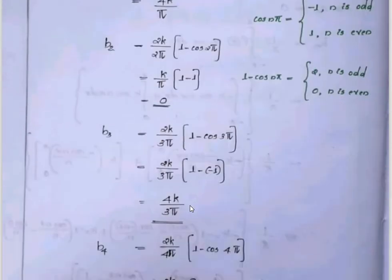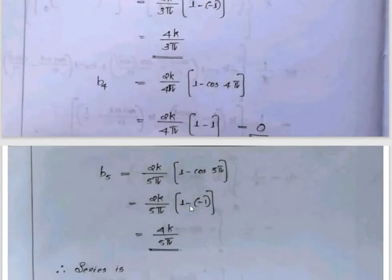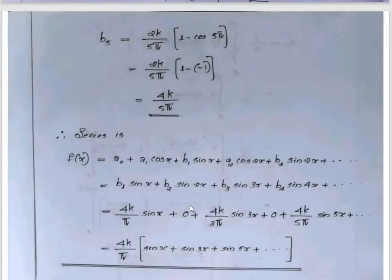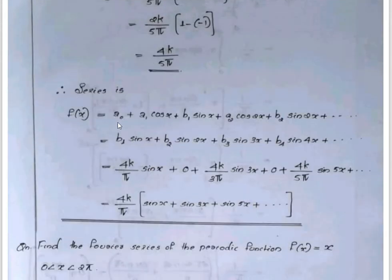So b1, b2, etc. give the Fourier series. With a0 equals 0, a1, a2 all zero, and b1, b2 values determined, we have the complete Fourier series for this square wave function.